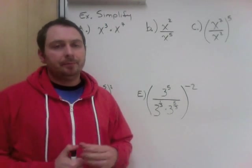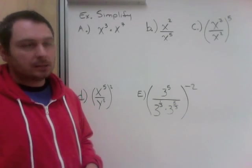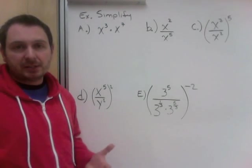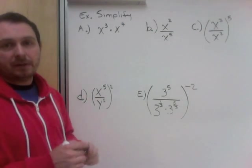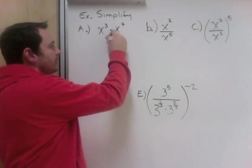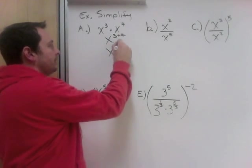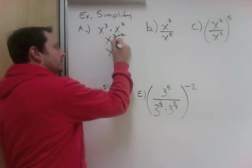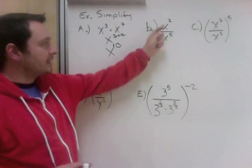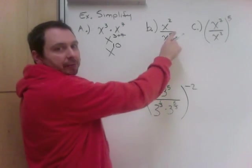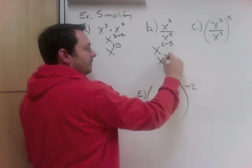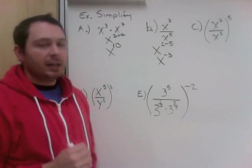We're going to look at some examples, starting with learning intention number two: simplifying when we have the same base. First: x cubed times x to the 7th. Do they have the same base? Yes, both base x, so we can simplify. When it's multiplying, we add the exponents: 3 plus 7 gives x to the power of 10. Next: x squared divided by x to the 5th. Same base, both x. Dividing is quotient, and for the quotient law we subtract: x to the 2 minus 5, which is x to the negative 3.